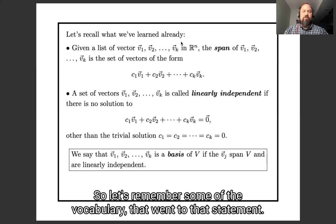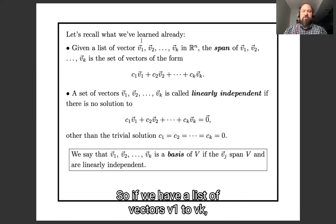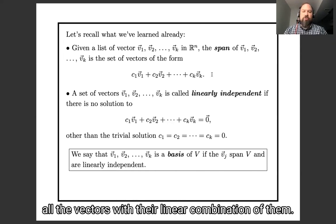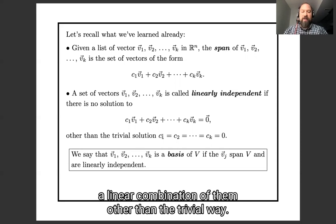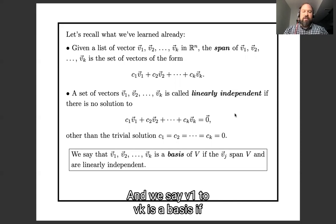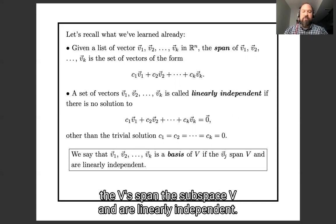So let's remember some of the vocabulary that went into that statement. If we have a list of vectors v1 through vk, then their span is all the vectors that are a linear combination of them. And a set of vectors v1 through vk is called linearly independent if there's no way to write zero as a linear combination of them other than the trivial way. And we say that v1 through vk is a basis if the v's span the subspace V and are linearly independent.